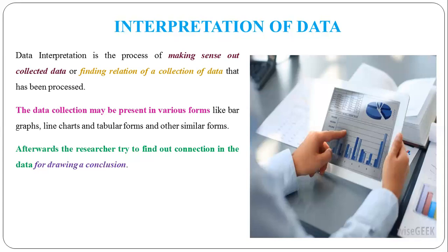90% of people are saying they are satisfied with the quality of the product, and 10% are saying they are not satisfied. Here the researcher finds a connection — how many are satisfied and how many are not — and tries to draw a conclusion that the consumer is happy with the quality of the product. The researcher collects and presents data in a table or graph, finds a connection between the data, and draws a conclusion. This is called interpretation of data.